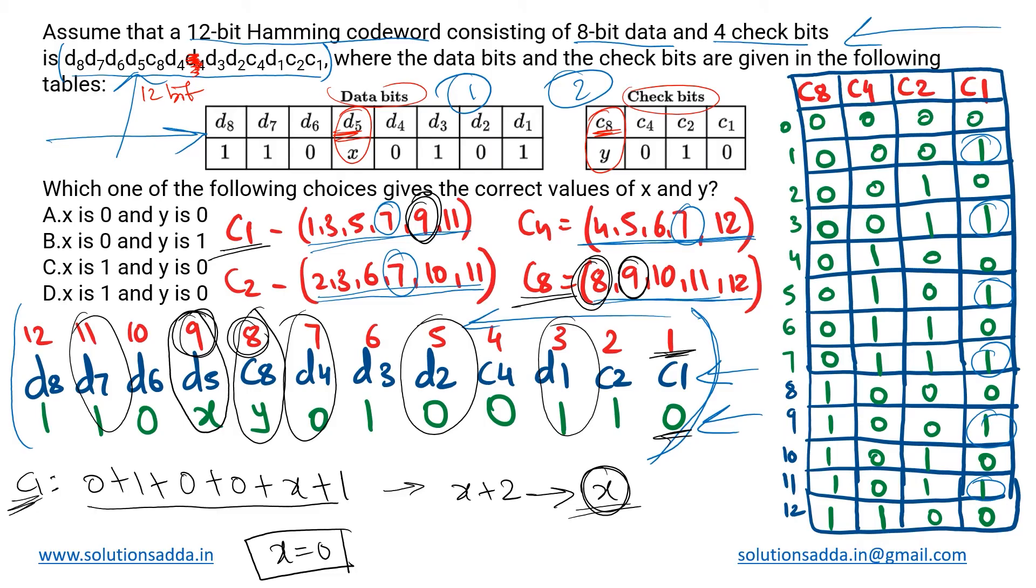Now we have got the value of x and in the same way we will be dealing with y as well. For y, which is position 8, it was present only in c8. So now we will be doing the same thing for c8. Which are the positions that it is taking care of? From 8 onwards till 12, which means all of these in the box.